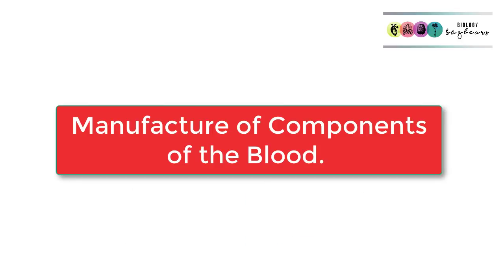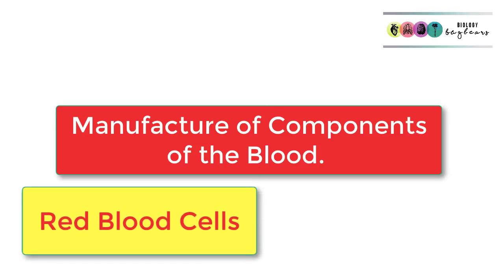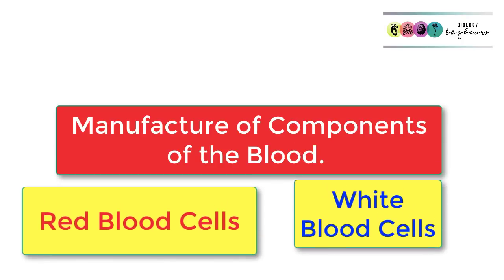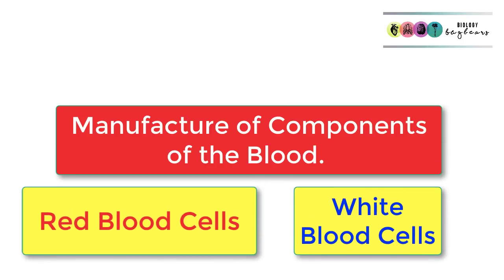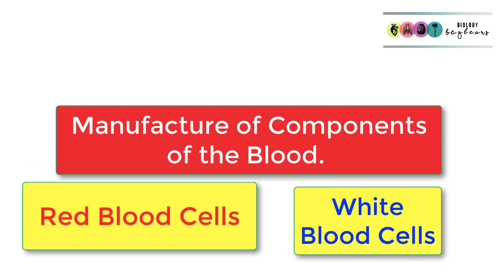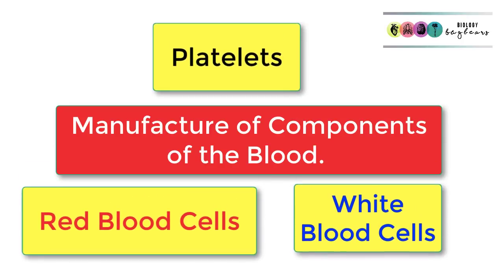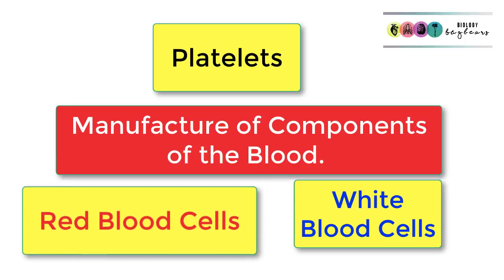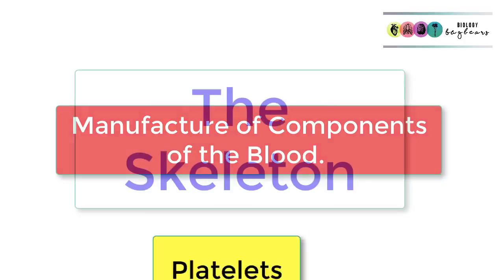The fourth is a very important function of bone: the manufacture of components of the blood — for example the red blood cells, those erythrocytes; the white blood cells, those leukocytes; and the platelets, the thrombocytes. They're all produced in the red bone marrow of bone.